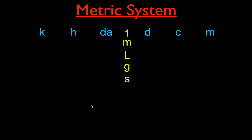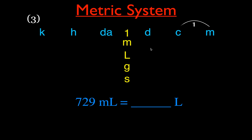Example 3: convert milliliters to liters. Milli is all the way to the right on our chart and liter is in the middle, so we go three steps to the left. Moving the decimal three places to the left, 729 milliliters becomes 0.729 liters. This makes sense because milli means one thousandth — 729 milliliters is less than one liter, so we have just a fraction of a liter.